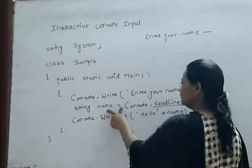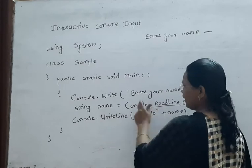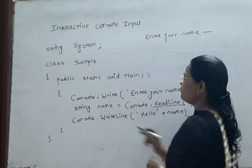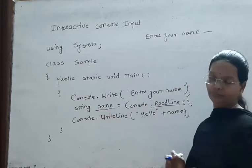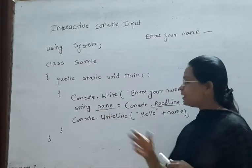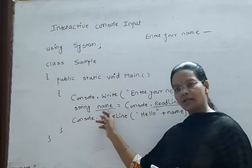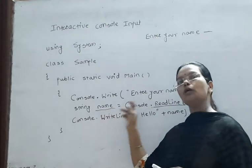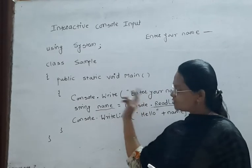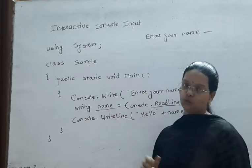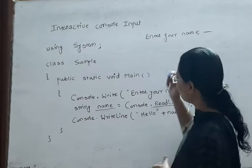The name given via keyboard is read by the ReadLine method and then assigned to the name variable. Here we declare the name variable and also allocate its value at the same statement. This same thing can also be done by first declaring the variable and then using the assignment operator to assign the value separately.